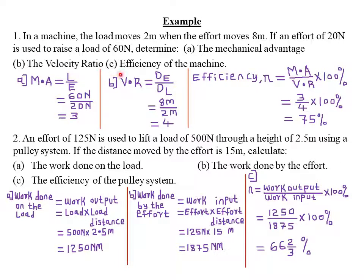Part C — Efficiency equals mechanical advantage divided by velocity ratio, expressed as a percentage: 3 divided by 4 times 100%, which gives 75%.